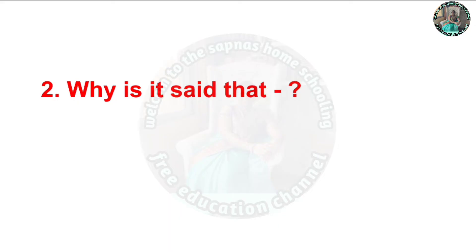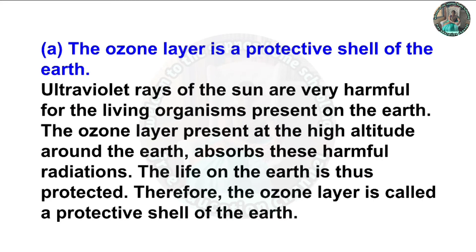Question 2(a): Why is it said that the ozone layer is a protective shell of the earth? Answer: Ultraviolet rays of the sun are very harmful for living organisms on earth. The ozone layer present at high altitude around the earth absorbs these harmful radiations, protecting life on earth. Therefore the ozone layer is called a protective shell of the earth.